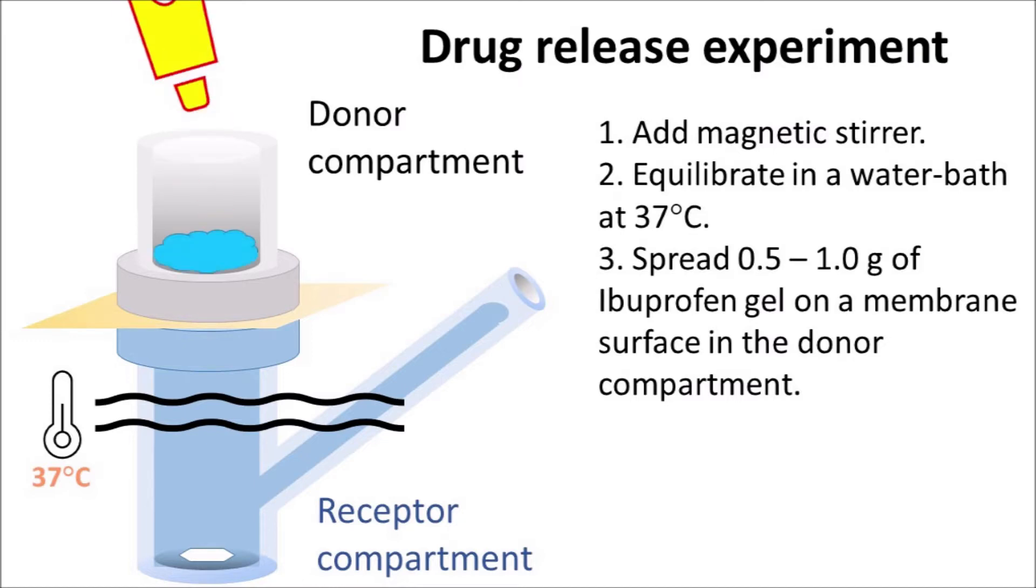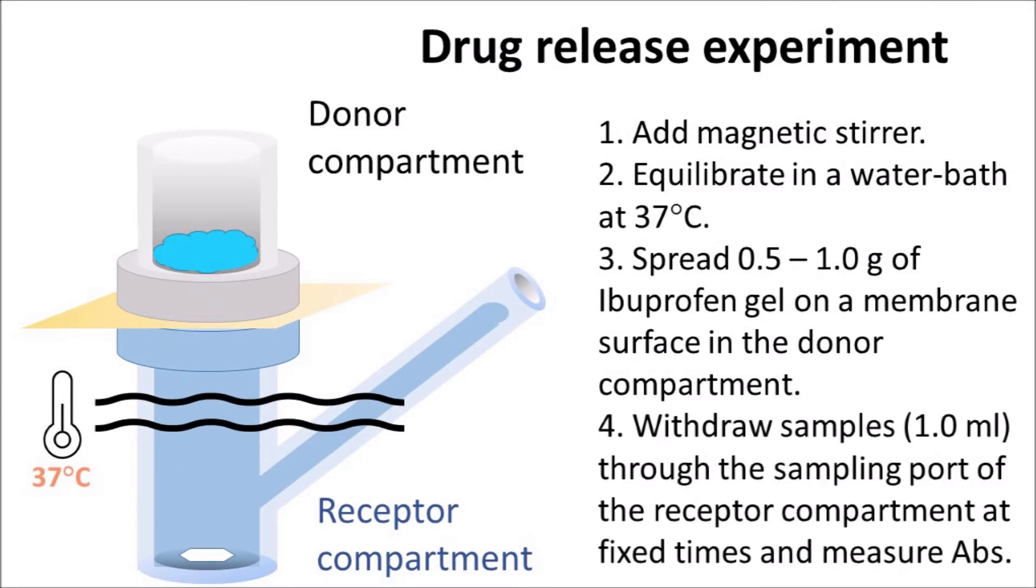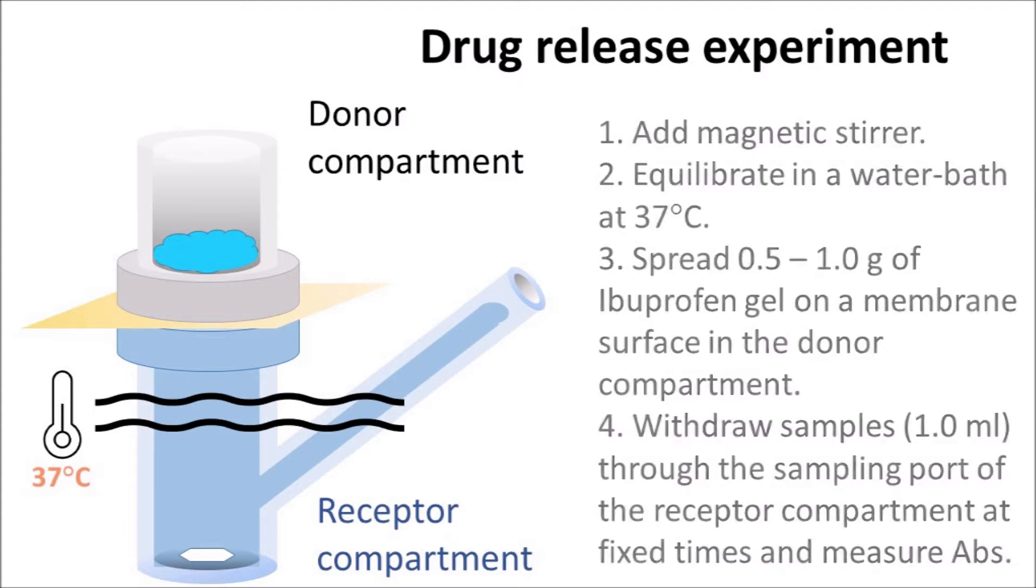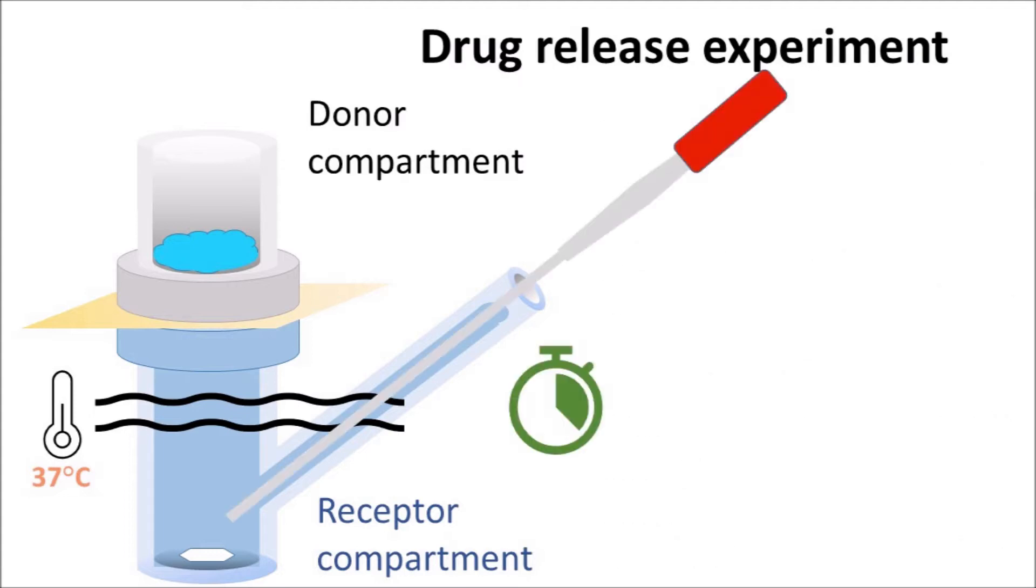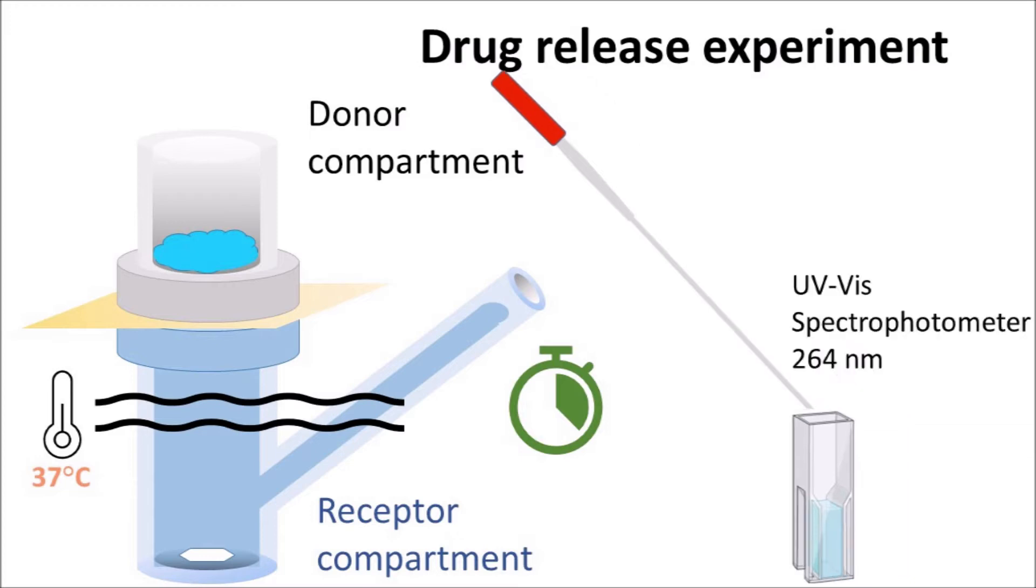We will spread around 0.5 to 1 gram of ibuprofen gel on the membrane surface in the donor compartment. Ibuprofen will start releasing from the gel, permeating through the membrane, and we will be sampling the drug from the sampling port. Then we will use UV spectrophotometer to assay ibuprofen.